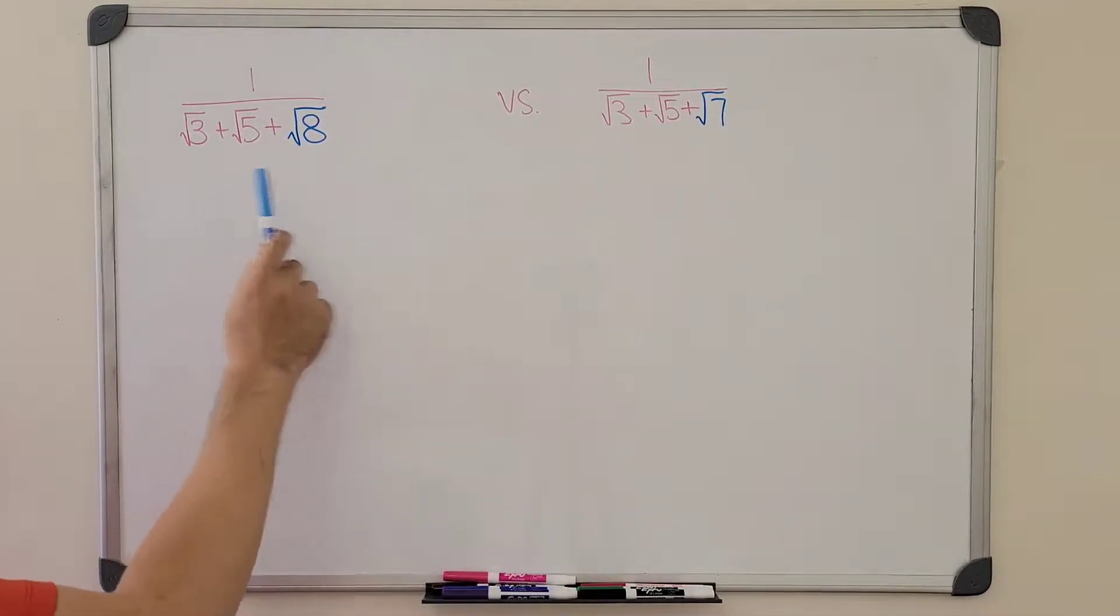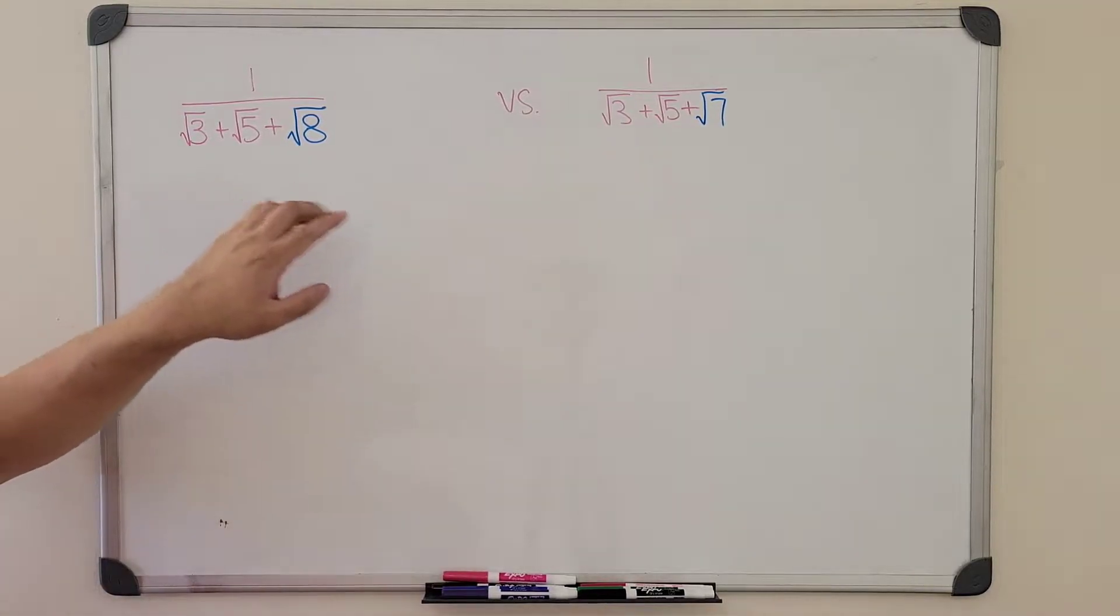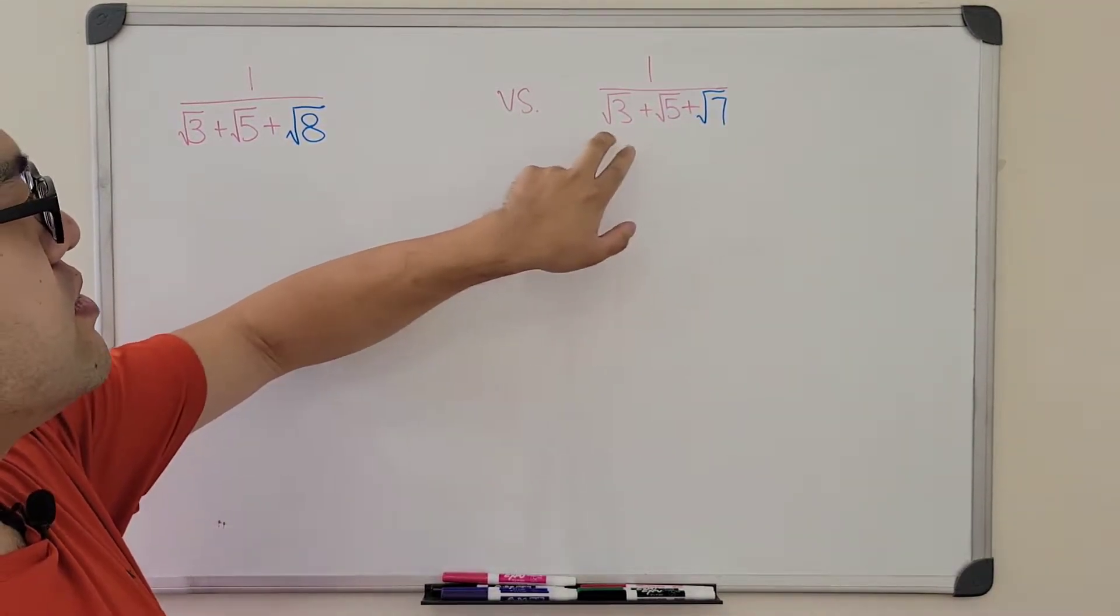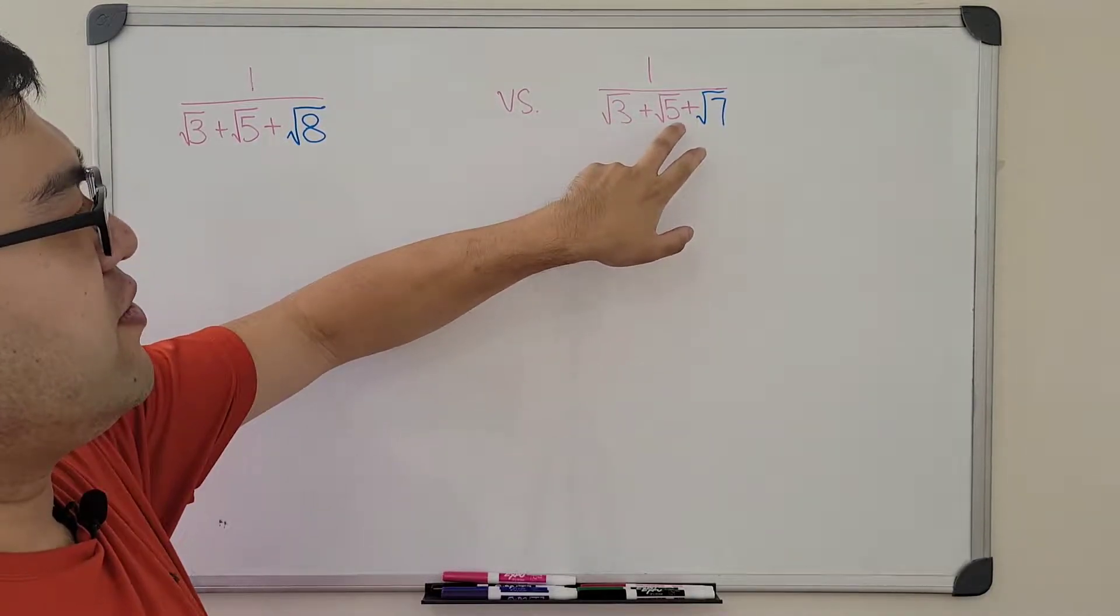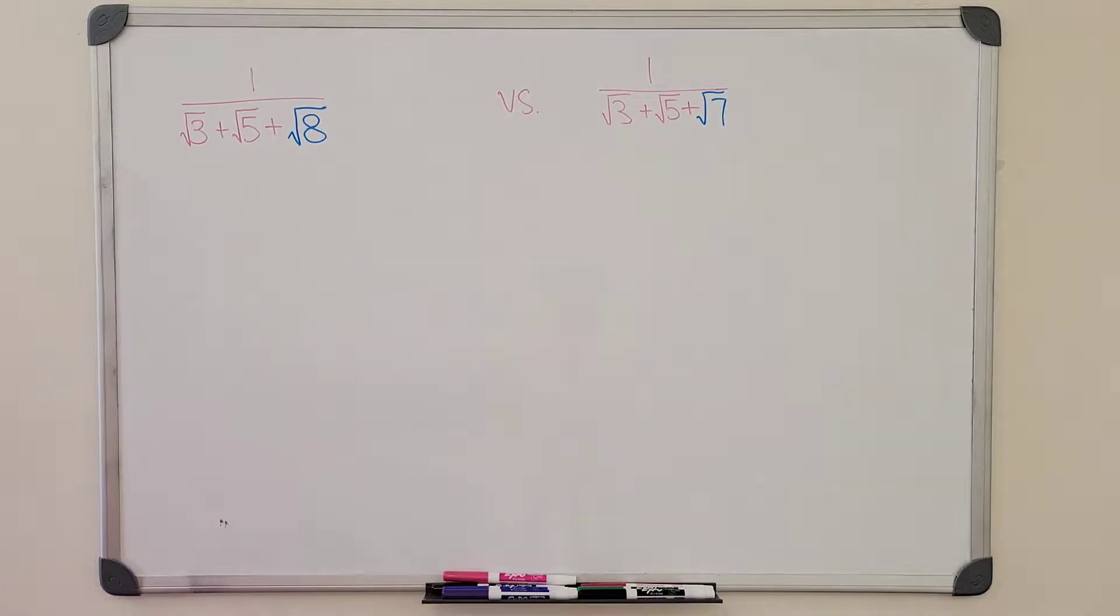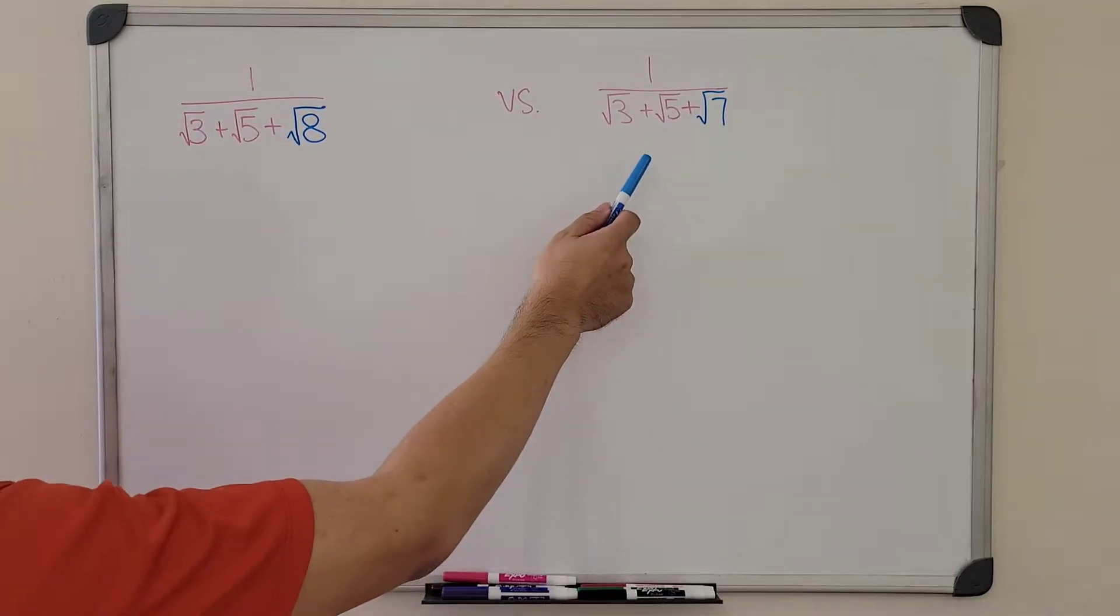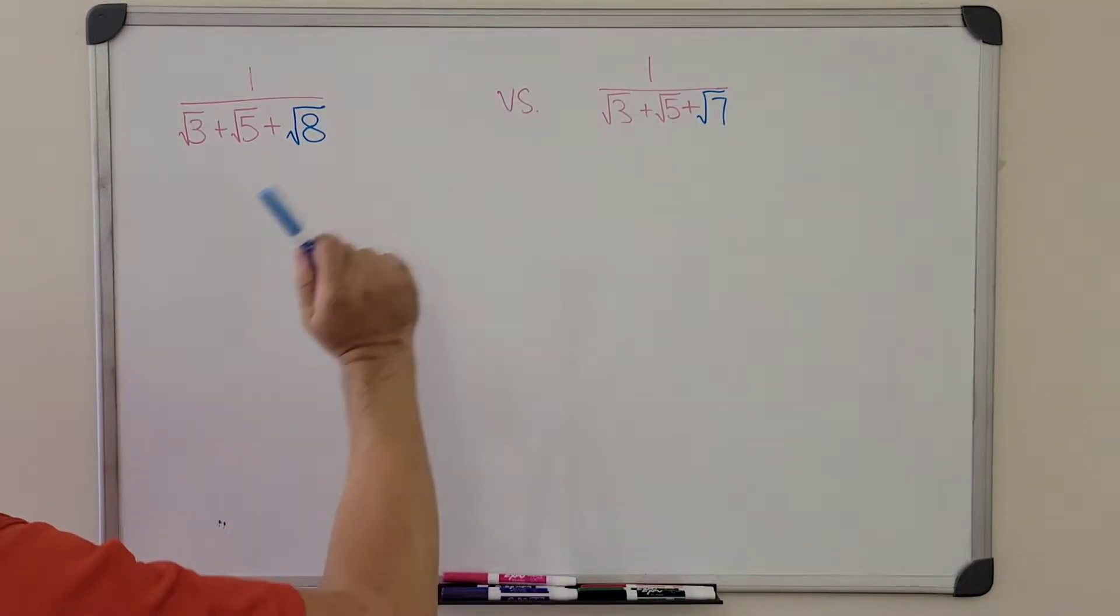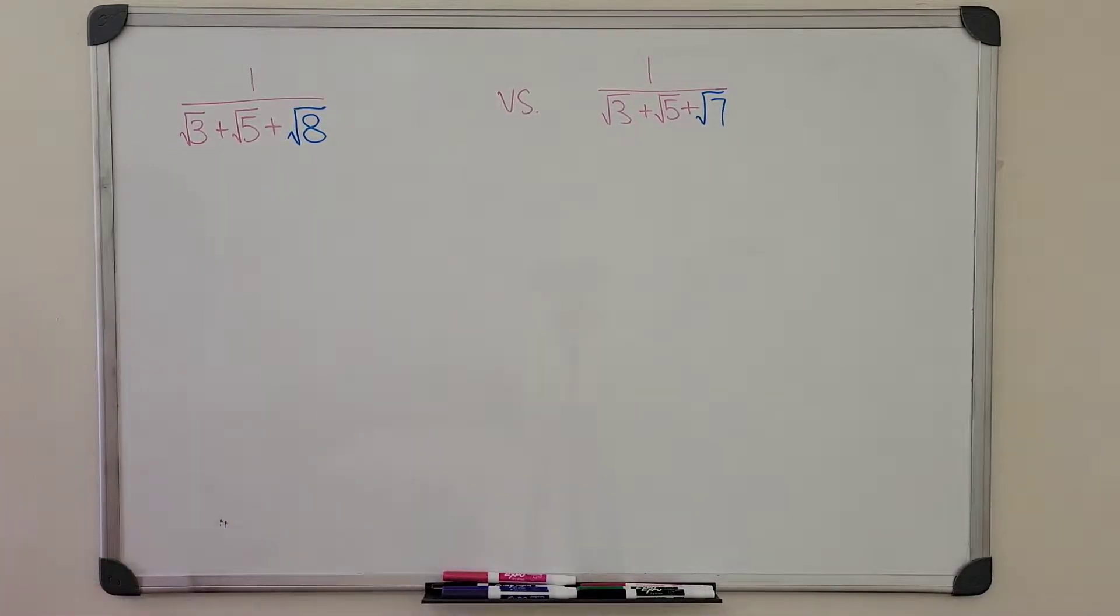The answer is the first one is actually easier. Even though the second one has the difference that is 2, right? 3, 5, and 7. There are two apart inside of the square root. It is actually a lot harder to simplify the one on the right hand side than the one on the left hand side. Why? Here is the reason.